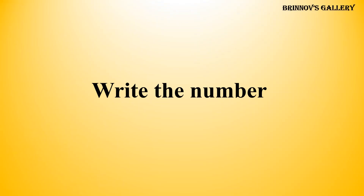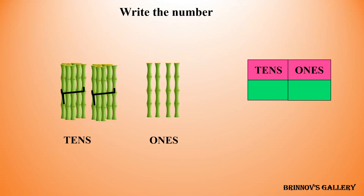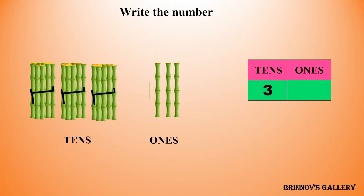Write the number. 1, 2, 3 — 3 tens. 1, 2, 3, 4 — 4 ones. The number is 34.